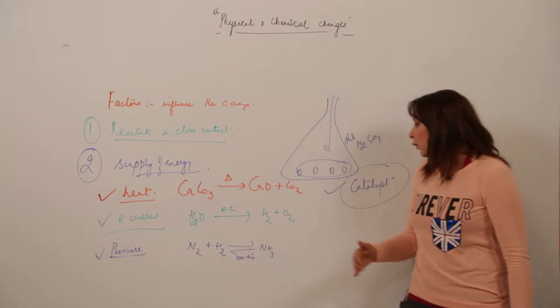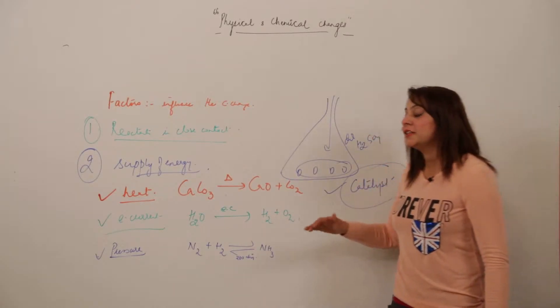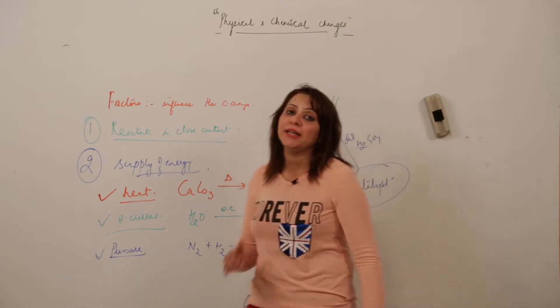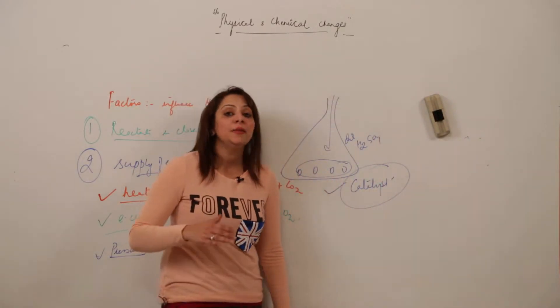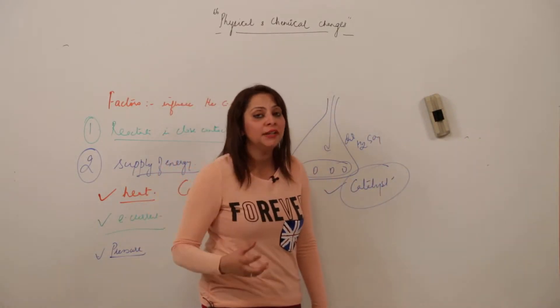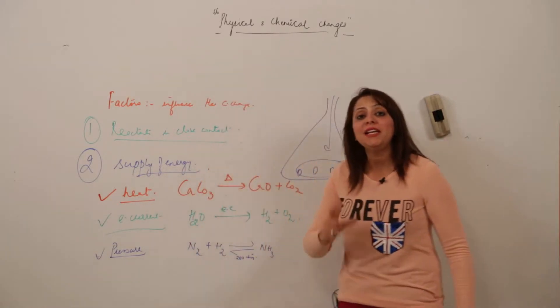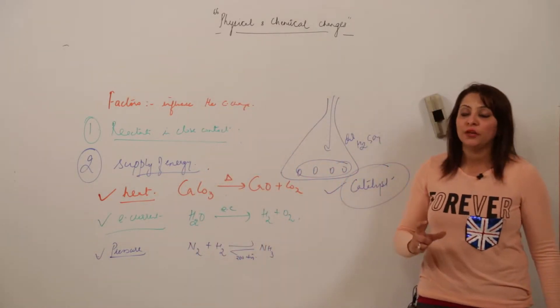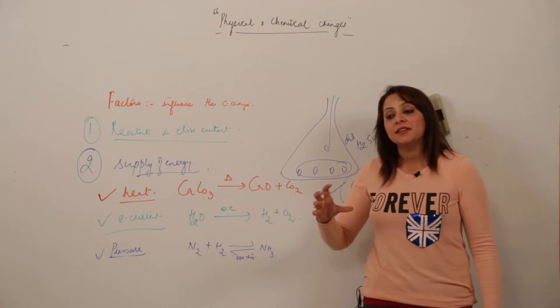So again, what is a catalyst? A catalyst is a substance which increases the rate of reaction. That means it makes the reaction happen without undergoing any change in itself. The amount of catalyst you'll be adding, you'll be getting after the reaction.